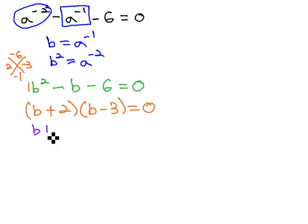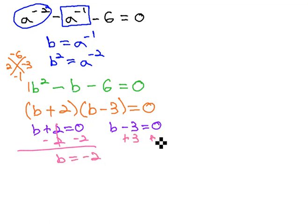Now that it's factored, we can set each factor equal to 0, b plus 2 equals 0, and b minus 3 equals 0, and then solve each of these equations, by subtracting 2 to get b equals negative 2, and adding 3 to get b is equal to 3.